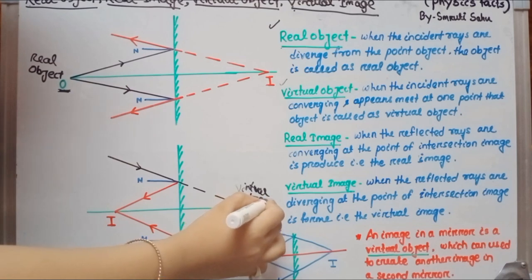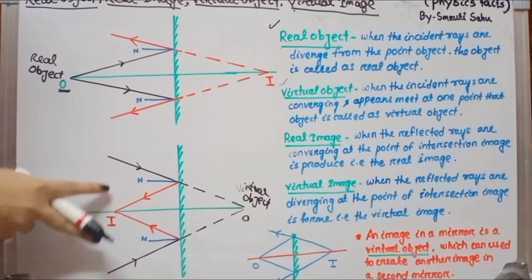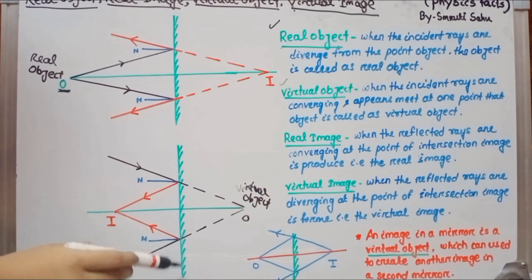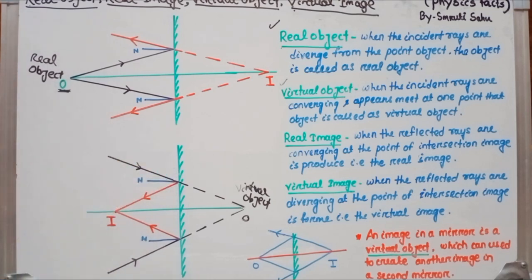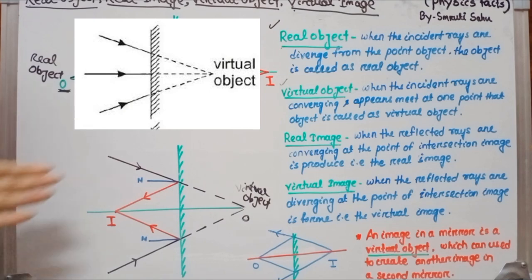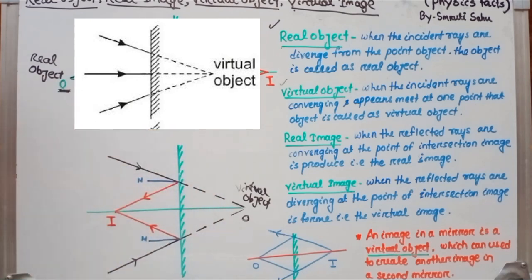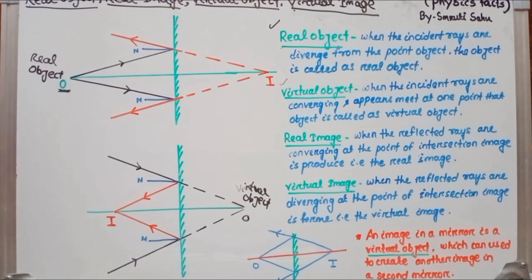Here we take two incident rays. This is one incident ray and this is another incident ray. The two incident rays come from infinity and hit the surface of the plane mirror, and here reflection takes place. In normal case or in our real life, a virtual object does not exist — it is just a substitute of a real object.